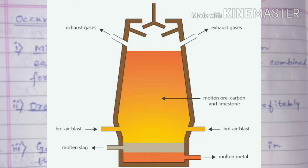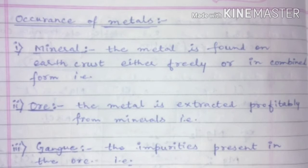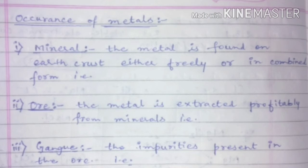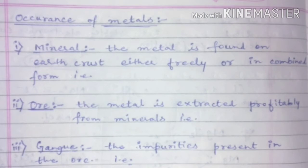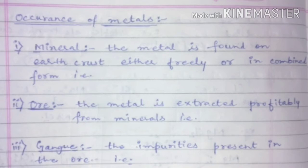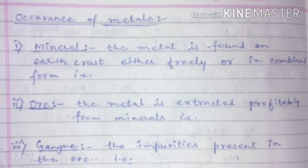Hello students. In this video we will discuss about the occurrence of metals. There are three important terminologies. First, mineral — mineral is the combined or free state of metal on the earth's crust. Second, ore — ore is the kind of mineral from which we can extract the metal profitably. From this we can say: all ores are minerals, but all minerals are not ores.